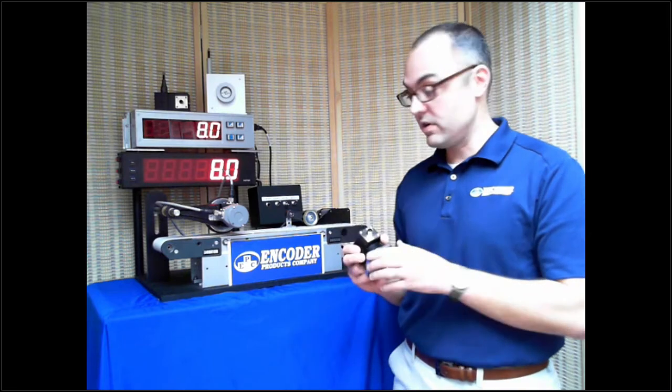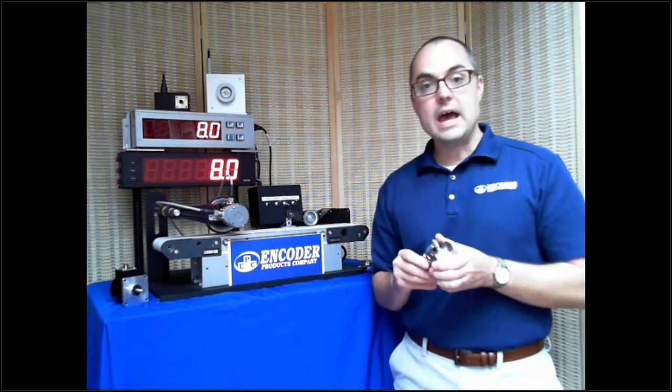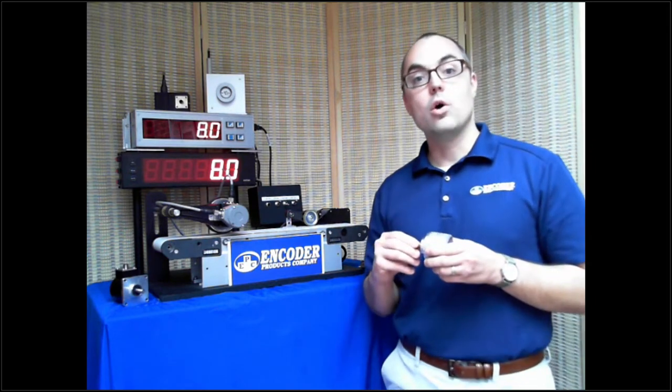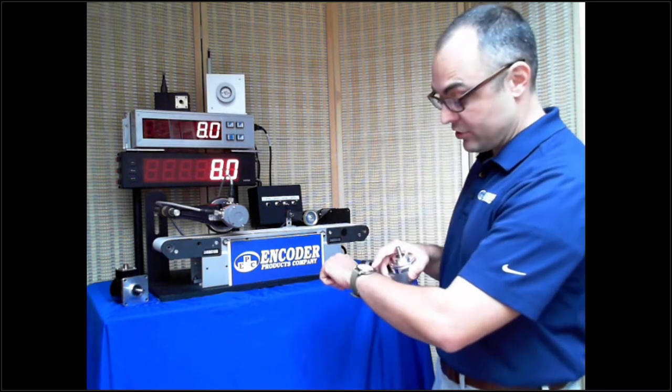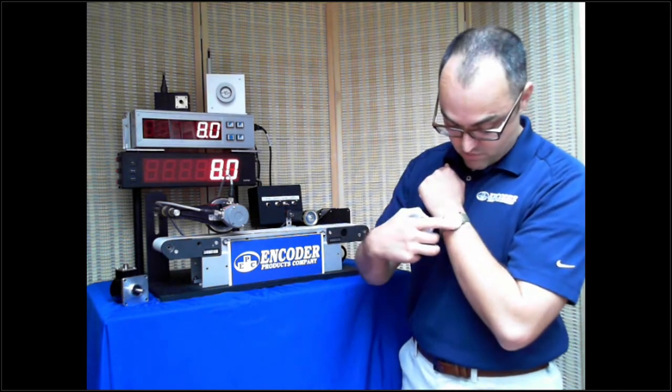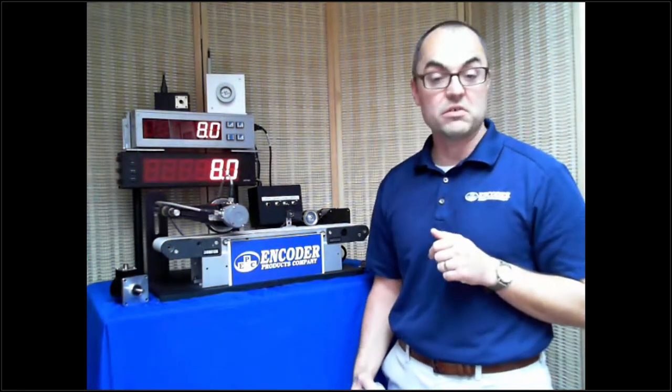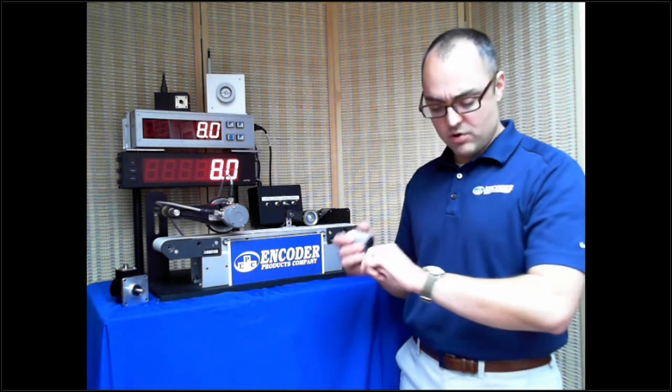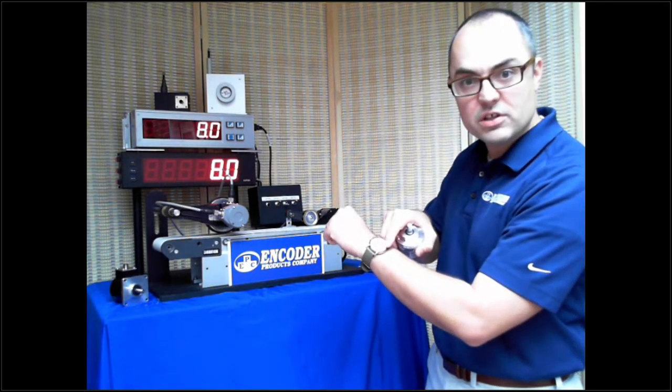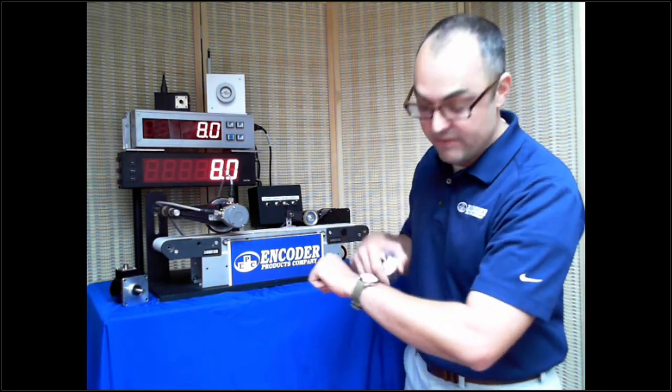An absolute encoder is different. Absolute encoders actually tell you where they are. They give you a discrete position. For example, I have a watch here. If I removed all the numbers, it'd be an incremental encoder. If I just listened to the ticking and counted those ticks, I could tell you how many seconds went by, but I better not miss one. An absolute encoder is a lot like putting the numbers on the face of the watch. It gives you a discrete position. I can look at my watch and say it's 11:31 now.